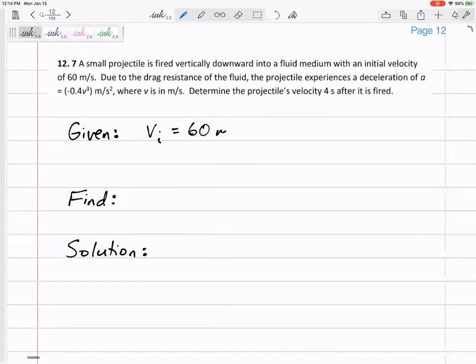An initial velocity of 60 meters per second. The projectile experiences a deceleration, so an acceleration of negative 0.4v cubed. Determine, so find the velocity.